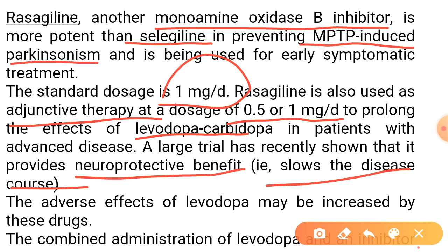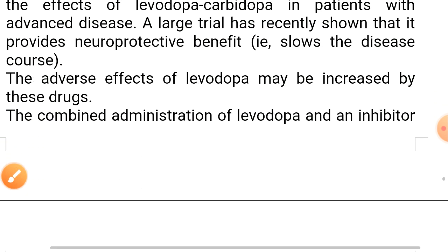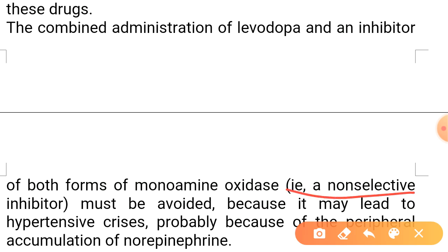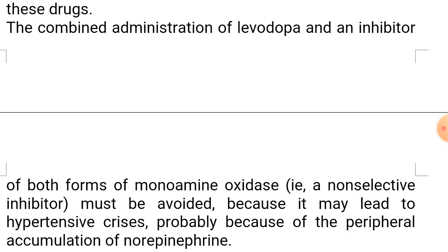Adverse effects of levodopa may be increased by these MAO-B inhibitor drugs. The combined administration of levodopa and a non-selective monoamine oxidase inhibitor — one that inhibits both forms — can cause a very dangerous hypertensive crisis. That is why we never give MAO-A type inhibitors like phenelzine together with levodopa. The reason is peripheral accumulation of norepinephrine: these drugs increase norepinephrine, dopamine, and serotonin concentrations, all of which have cardiovascular and blood vessel effects that can increase blood pressure. Therefore, they are to be avoided.